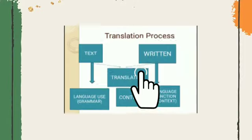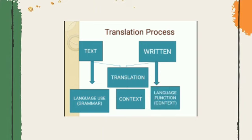Now let's talk about the translation process. Since our class is Indonesia-English translation, the focus this semester is on translating written text. In the PowerPoint diagram, translation sits at the center and consists of two elements: written text and language use — including grammar, context, and language function. When translating from source to target language, you cannot go directly to translation without first considering grammar rules.